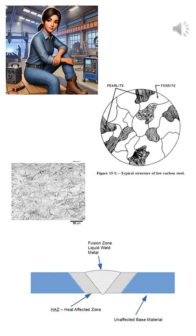There are three basic microstructural zones in any weldment: the weld metal, the heat affected zone or HAZ, and the base metal.